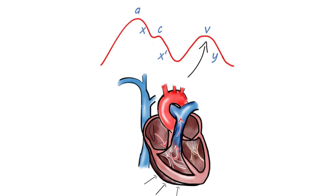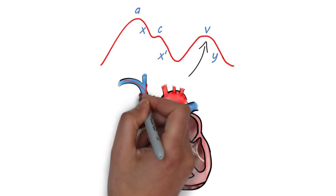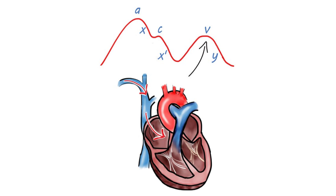The V wave corresponds to the venous filling. When the tricuspid valve is closed, the right atria begins to fill with blood, increasing the pressure of the right atria and creating the second peak, or V wave.